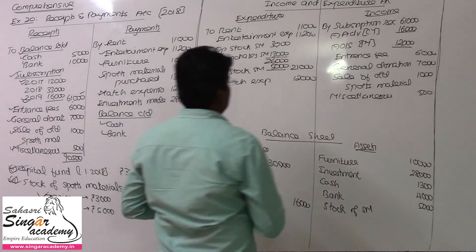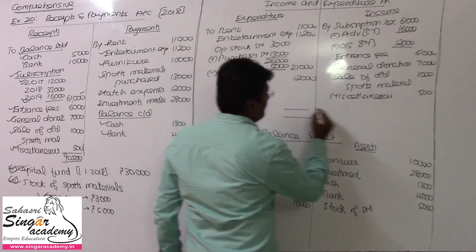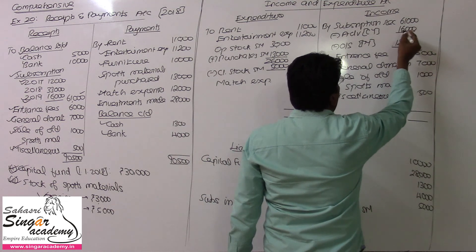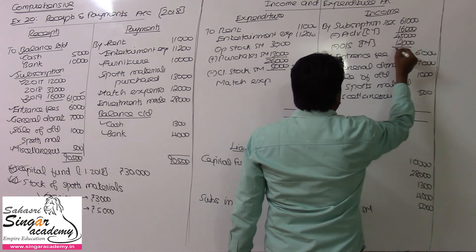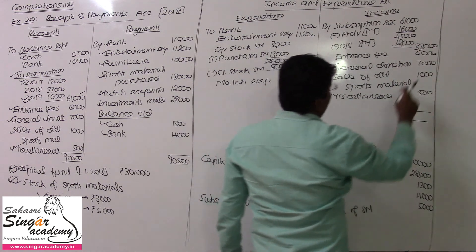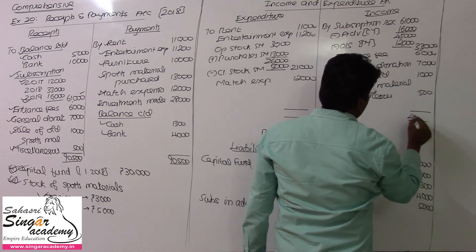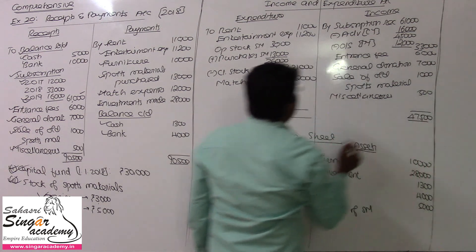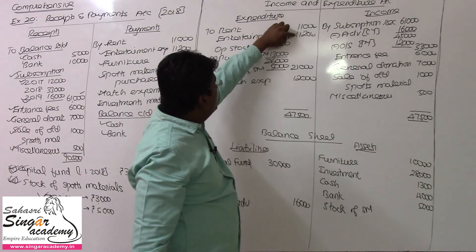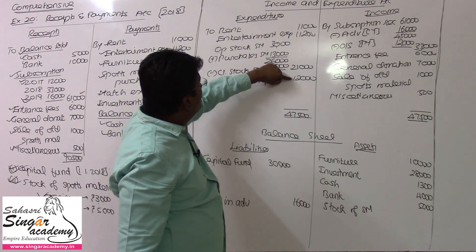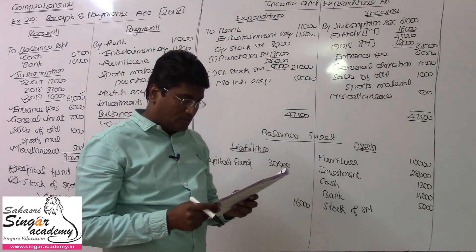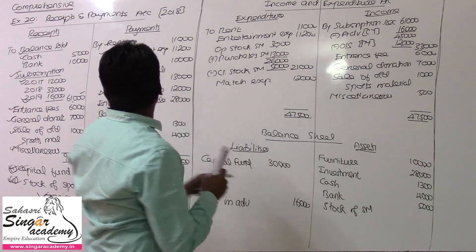We have posted everything. Now to find out the surplus or deficit. Income side: 61 plus 16 minus 16 = 45,000 rupees, minus 12,000 = 33,000. So, 33 plus 6 plus 7 = 47,500 rupees on the income side. Expenditure side total: 55,200. So, 2,700 is the deficit here.